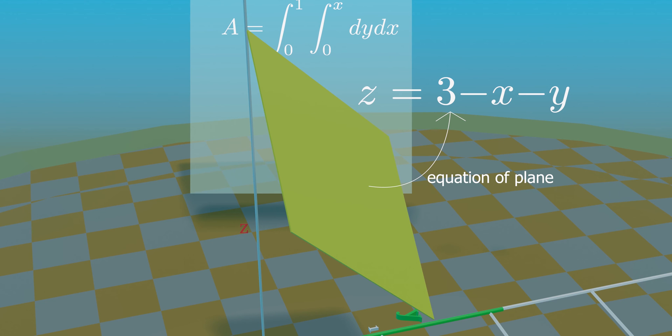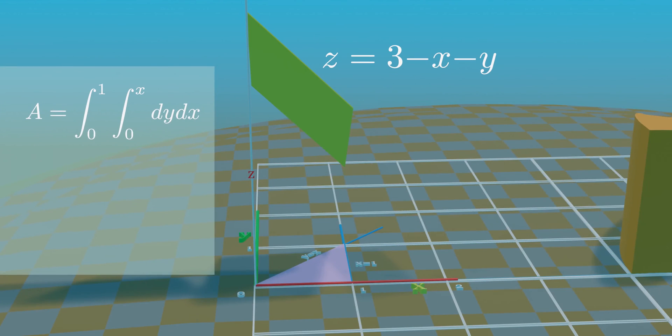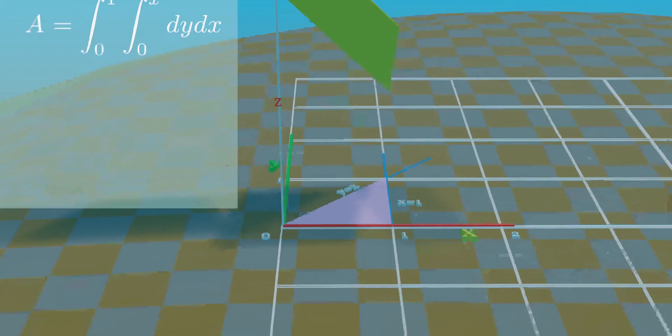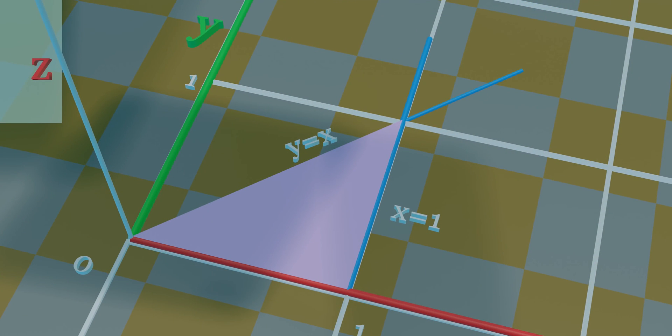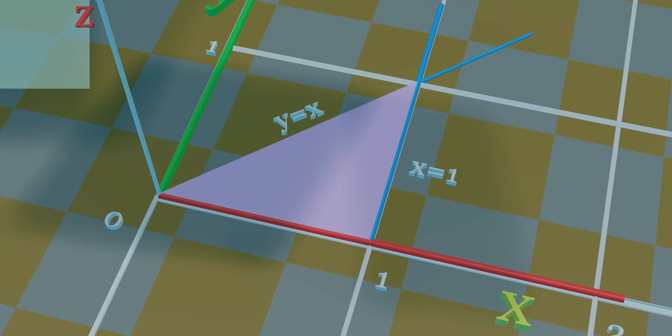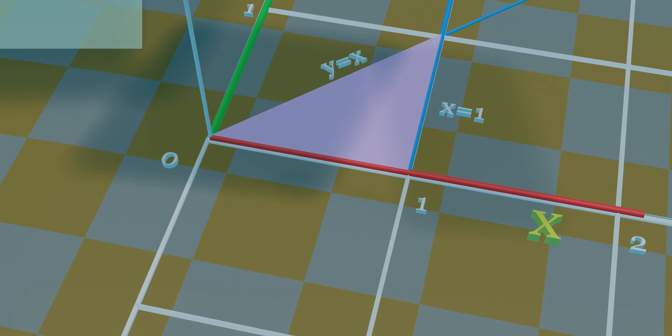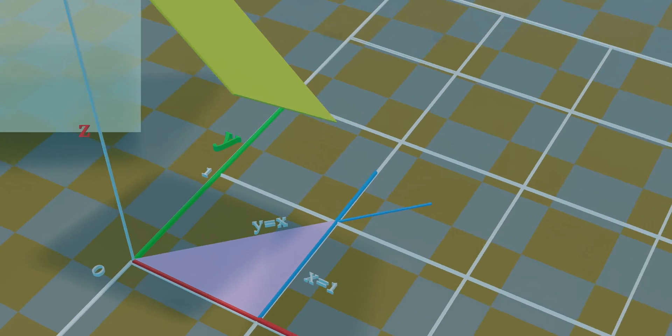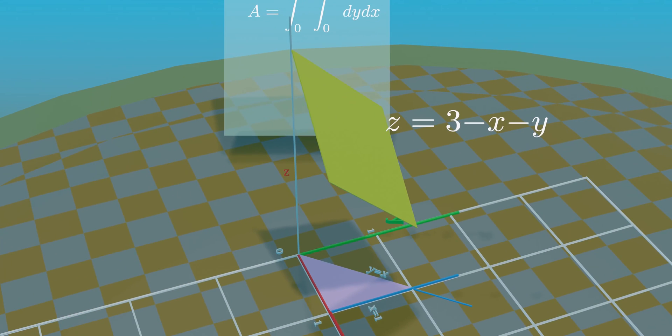In more precise way, find the volume of the prism whose base is the triangle in the xy-plane, bounded by the x-axis and the lines y equals x and x equals 1, and whose top lies in the plane having this equation.